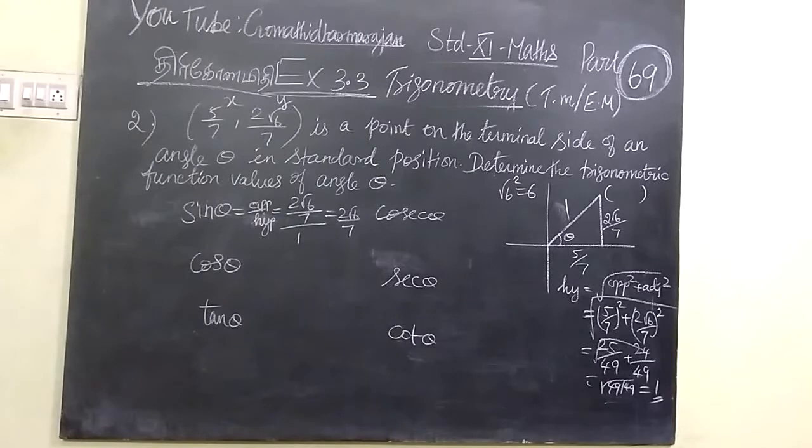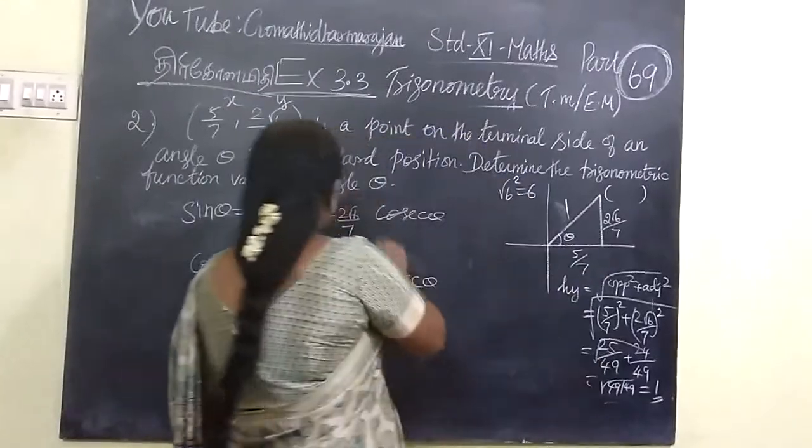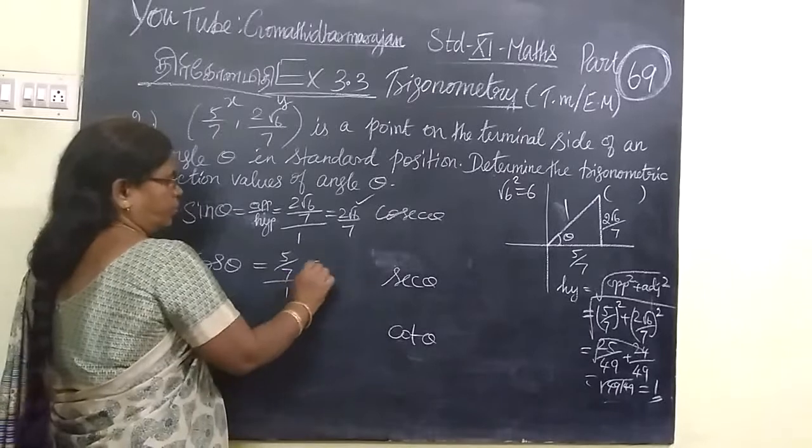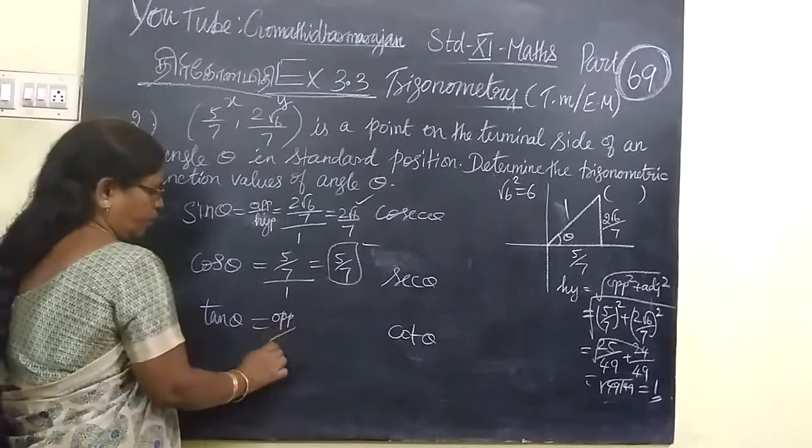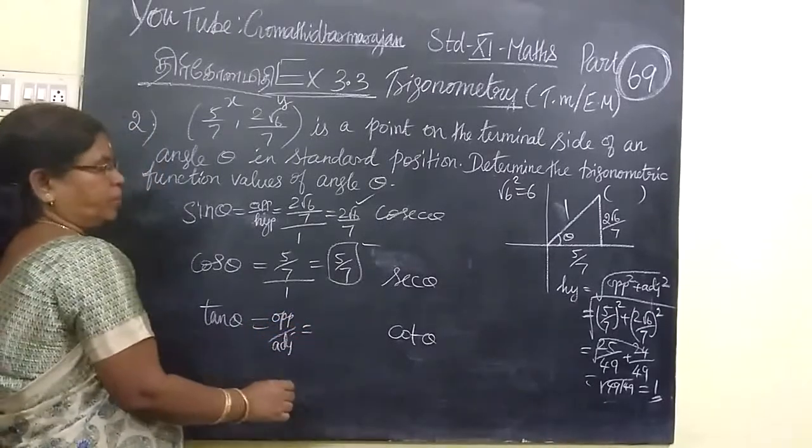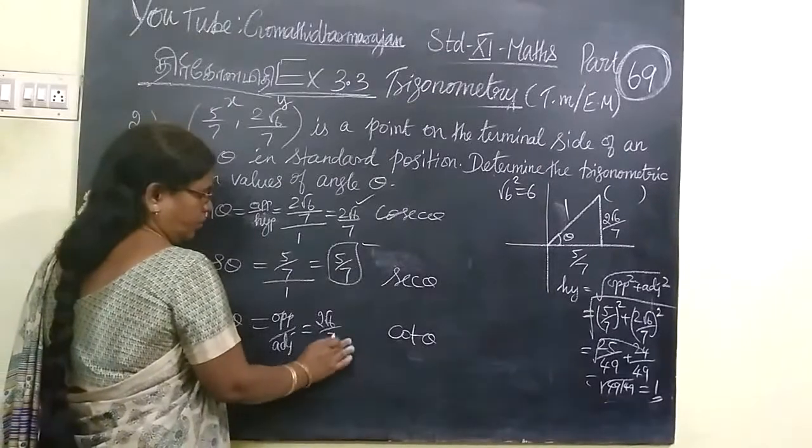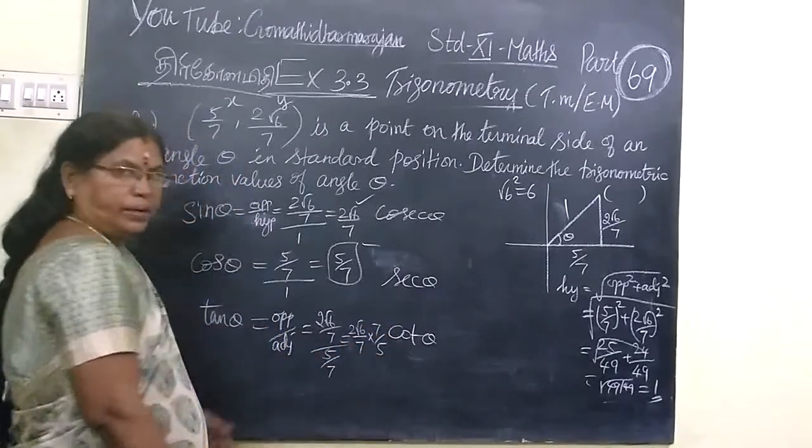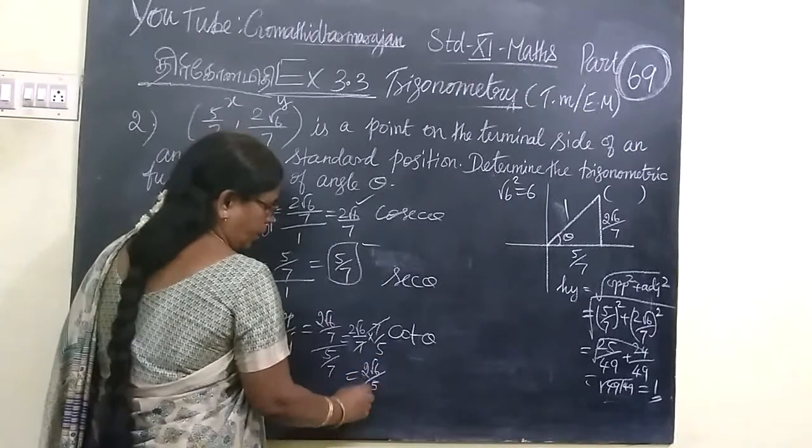In the case of tan, tan is opposite by adjacent. So, opposite is 2 root 6 by 7, adjacent is 5 by 7. This is equal to 2 root 6 by 7 into 7 by 5. You write in the reciprocal form. So, if you cancel, answer is 2 root 6 by 5 only.